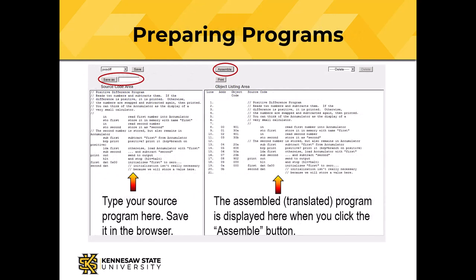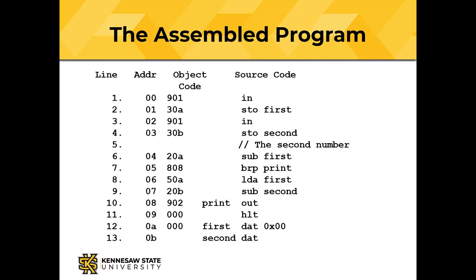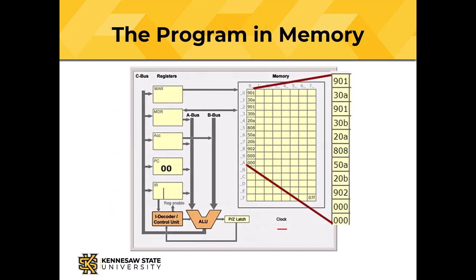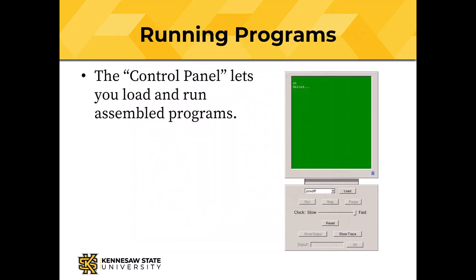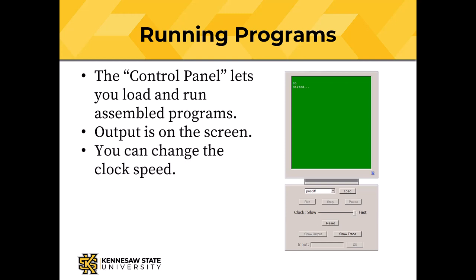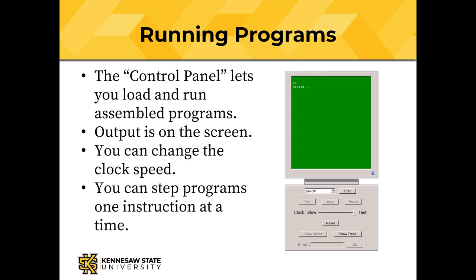You prepare programs like this: type source code into the left-hand pane of the assembler block, give it a name, and click Save As. Then click Assemble. Your program is translated into binary notation represented as hex numbers and saved in computer memory. The assembled program shows an object code column with the actual computer instructions as hexadecimal numbers. When the program is loaded into memory, only the object code — only the hexadecimal numbers — gets loaded. The control panel lets us load and run assembled programs. Output appears on the screen. You can change the clock speed with a slider, and you can step programs one instruction at a time.